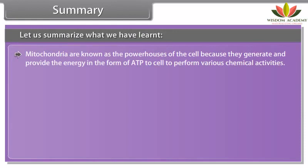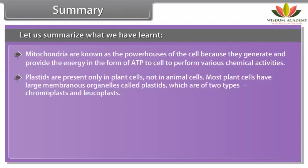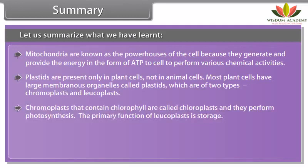A cell has different kinds of cell organelles which perform specific functions and they are membrane bounded. Endoplasmic reticulum is a large network of membrane bound tubes and sheets. On the basis of presence of ribosomes, ER is of two types: rough endoplasmic reticulum and smooth endoplasmic reticulum. Golgi apparatus consists of a system of membrane bound vesicles arranged parallel to each other in stacks called cisternae, and it dispatches packaged material to various targets.